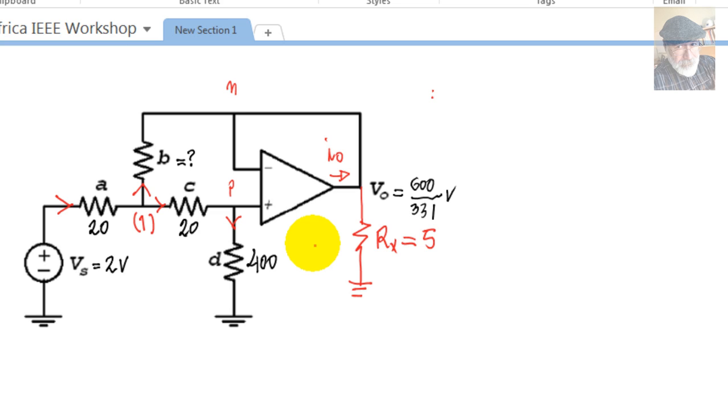If I look again at the KCL equations that we wrote to solve that circuit, we realize that this resistor here will not change the KCL equations of nodes 1 or p, so that v0 will continue to have the same value. This current Ix will be v0, which is known, divided by Rx, which is also known.